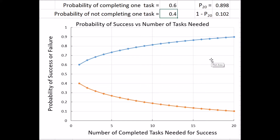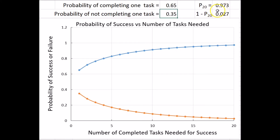The bottom line here is that by increasing your skill so that your probability of completing a given task is a little bit greater can make a big difference over the long haul. Let's make it 0.65 as your probability of success — now you almost have 100% probability of success over the long haul: 97.3% probability, just by being 15 percentage points higher than a 50-50 chance.